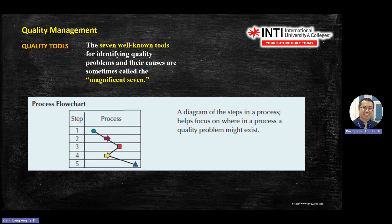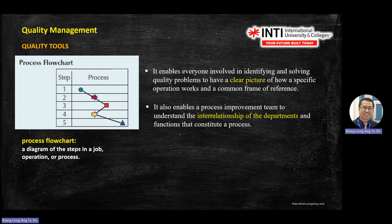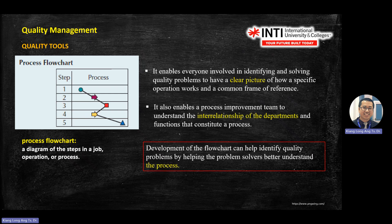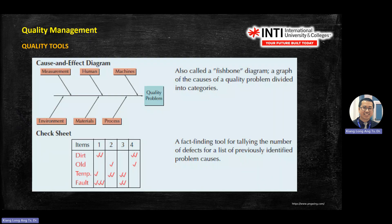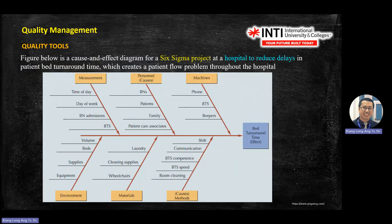Quality tools include the flowchart — process one, go to process two, go to process three, and so on. The second tool is the cause-and-effect diagram, which looks like a fishbone, so it is also called the fishbone diagram. A checklist is quite normal. The fishbone diagram is usually used for brainstorming and finding the causes that contribute to problems.